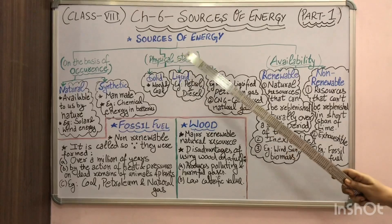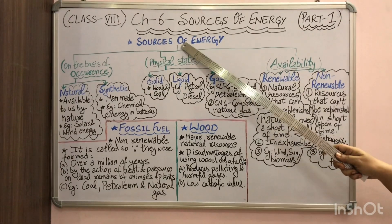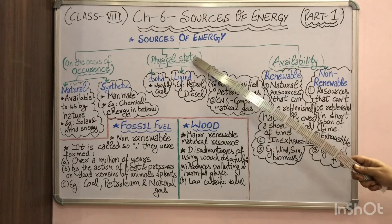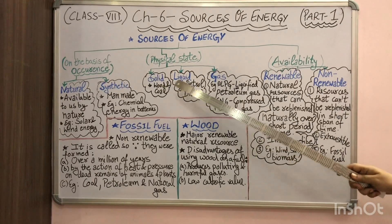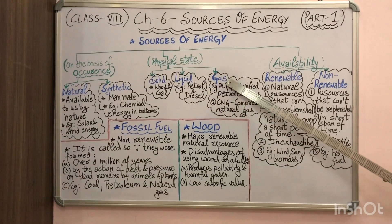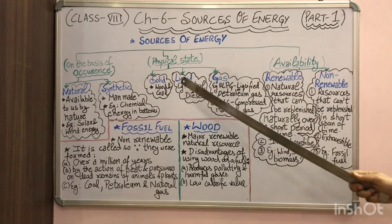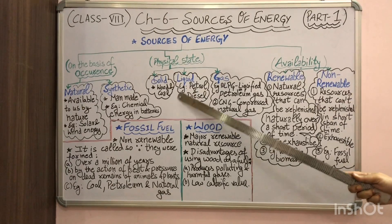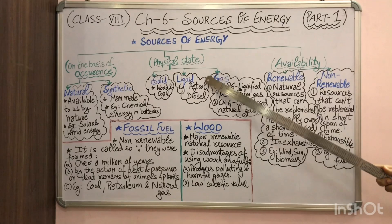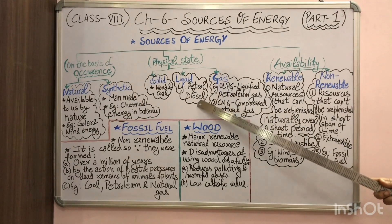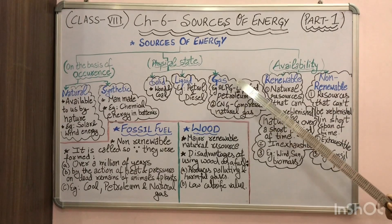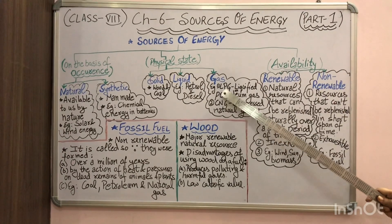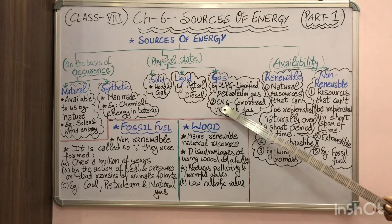The next category classifies sources of energy on the basis of their physical state: solid, liquid, and gaseous sources of energy. Solid sources include wood and coal. Liquid fuels include petrol, diesel, and kerosene. For gaseous sources of energy, the two main examples are LPG and CNG.